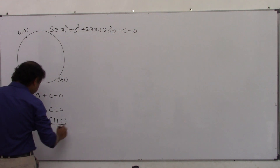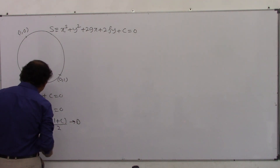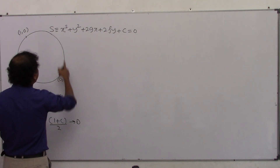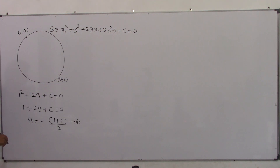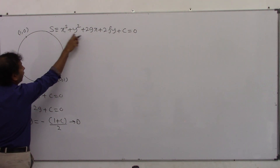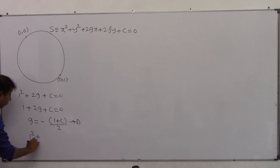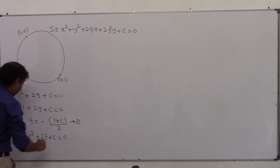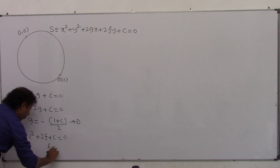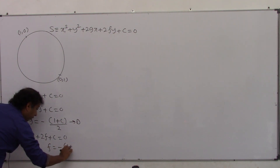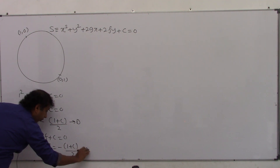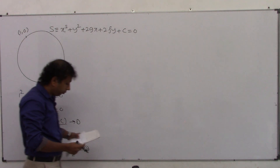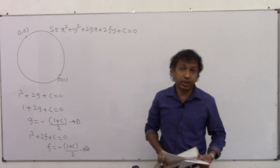Take equation 1 as from point (1,0). Secondly, putting (0,1) on the circle: putting x=0 and y=1, we get 1+2f+c=0. From this we can express f. Take this as equation 2.